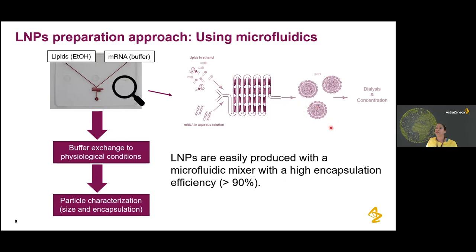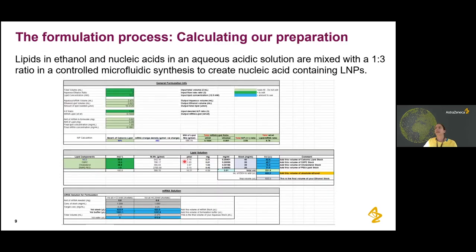After preparing the LNPs — with lipids in ethanol and mRNA in acetate buffer — we dialyze them against a physiological pH buffer, concentrate them if needed, and then do particle characterization for size and encapsulation. We typically mix at a one-to-three ratio of ethanol to aqueous volume, with a maximum lipid concentration of about 12.5 mM. At higher concentrations, there's a risk of the sample getting stuck inside the microfluidic chip.